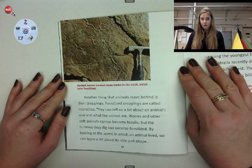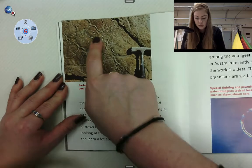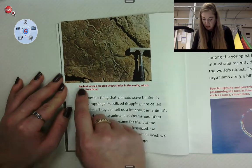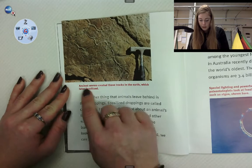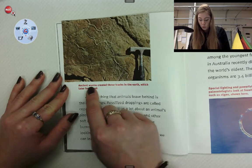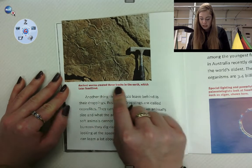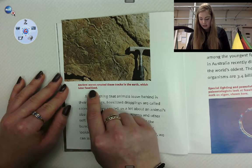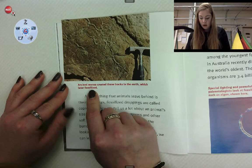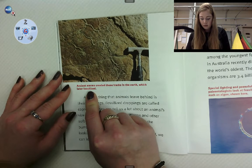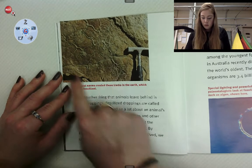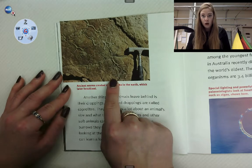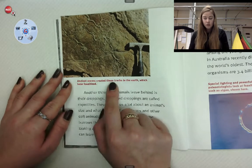I'm noticing that photograph. Those look strange. Let's read the caption: Ancient worms created these tracks in the earth, which later fossilized. So those are worm marks — that's so interesting.